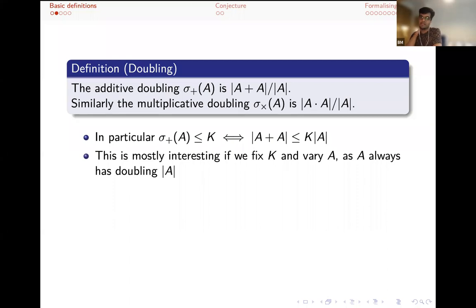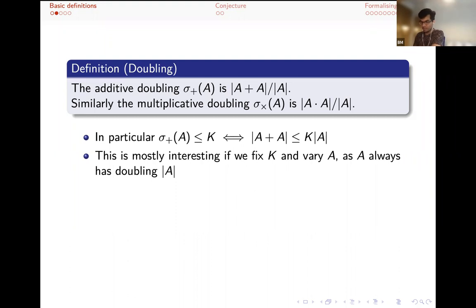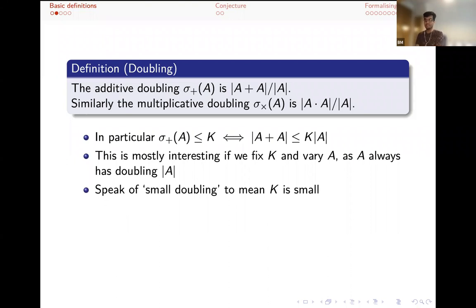The additive doubling is essentially defined as that ratio - how much bigger is the sum set compared to the original set. We have multiplicative doubling similarly. The additive doubling is less than a given constant K as long as A plus A isn't more than K times bigger than A. Saying that there is some doubling constant isn't at all interesting, so what we'll do instead is fix K and let A be big. We try to classify which sets have small additive or multiplicative doubling.